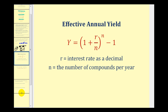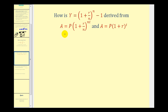Before we look at additional examples, let's see where this formula came from. In our first example, we determined the amount A using compounded interest, then used that amount to determine R in the simple interest formula. So if we replace A in the simple interest formula with the compounded interest formula and solve for R, it gives us the formula for effective annual yield.